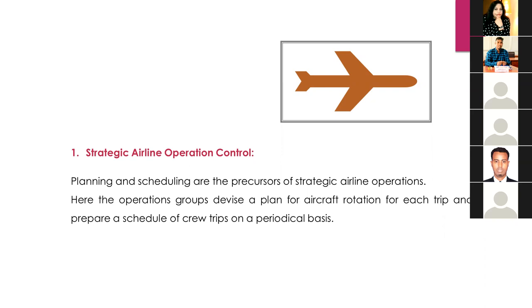In strategic airline operation control, the operations group devises a plan for aircraft rotation for each trip, and they prepare a schedule of crew trips on a periodical basis. This includes planning which aircraft is used on which route and organizing the crew schedule accordingly.